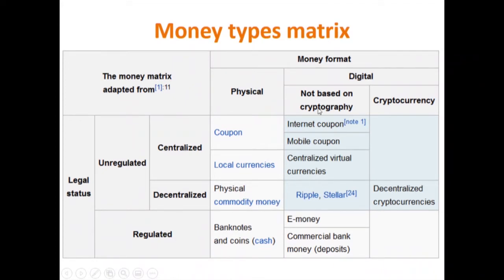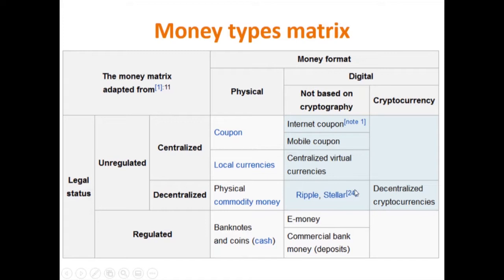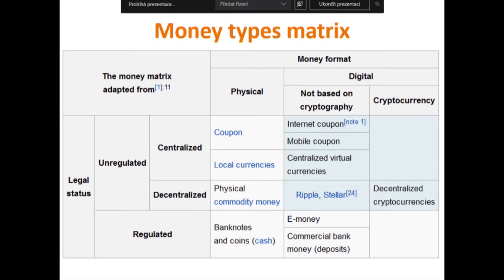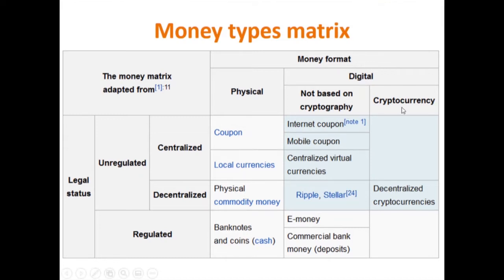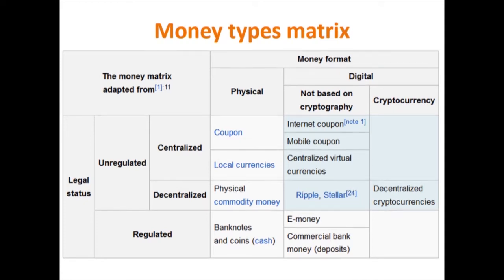There are also decentralized types: physical commodity money like cows, and digital decentralized currencies like cryptocurrencies. Some cryptocurrencies — like Ripple and Stellar Lumens — use a different type of DLT (distributed ledger technology) rather than blockchain. They are still decentralized and based on cryptography, though differently from Bitcoin. So according to some, Ripple, Stellar, IOTA, or Holo might not truly be cryptocurrencies — and even the ECB distinguishes between these types.